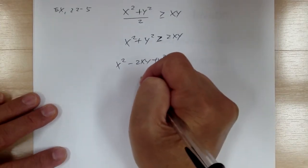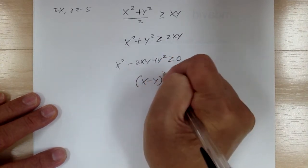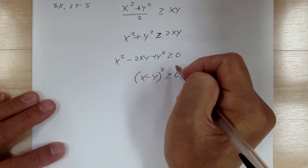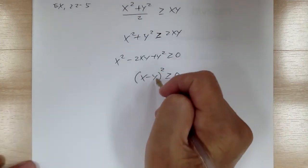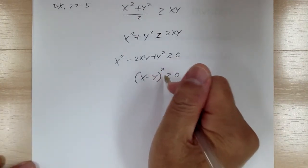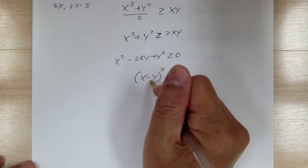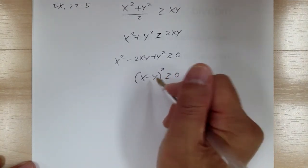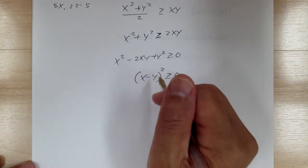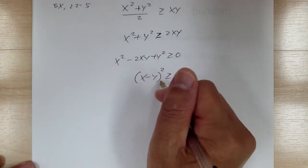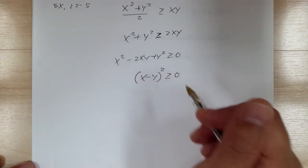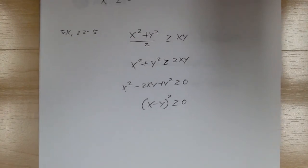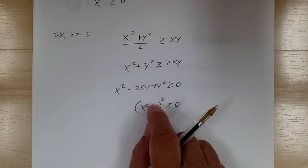We can factor the left side as a perfect square: (x minus y) squared is greater than or equal to 0. From here we can see this is always true no matter what x and y are. So for all real numbers x and y, this inequality always holds, and this is what the trivial inequality can be used for.